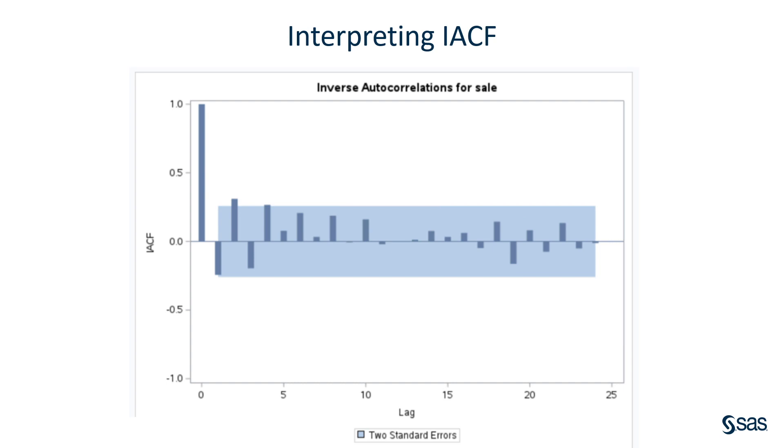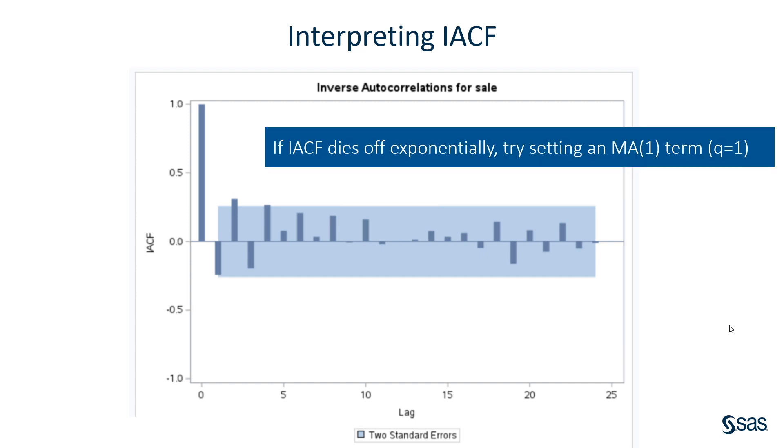And here we see the inverse autocorrelation function. This also, in conjunction with the other two that we saw, helps us diagnose AR and MA terms. It commonly suggests subset and seasonal autoregressive models better than the partial autocorrelation function. And it can be used for detecting over-differencing. If the data have been over-differenced, the inverse autocorrelation function looks like an autocorrelation function from a non-stationary process. That is, it exhibits slow decay. So, our rule of thumb here is if the IACF dies off exponentially, try setting an MA term of one. That is, Q equal to one.